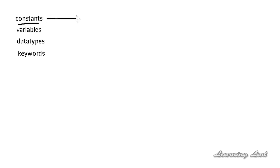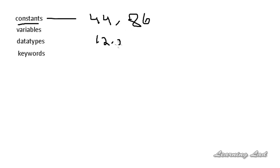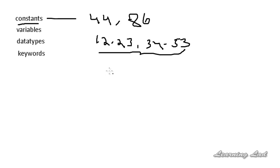As the name indicates, a constant is an entity which doesn't change. We have different types of constants. For example we have integer constants, which is a whole number — for example 44 or 86 or any whole number. Then we have floating point constants, for example 12.23 or 34.53 — a number with decimal values. Then we have character constants, for example a letter A, B, or Z — a single character.